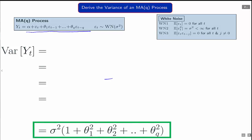What we're going to show then is that under these white noise assumptions, the variance of an MA(Q) process defined will look like this in the green box here.